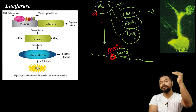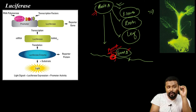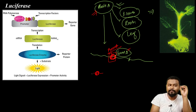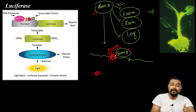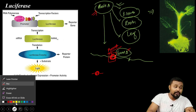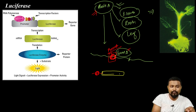We have Protein A to promote the protein. Gene A promoter — we use it to detect Protein A. The Protein A promoter is fused to a luciferase gene, forming a recombinant DNA. The luciferase gene is placed after the promoter.